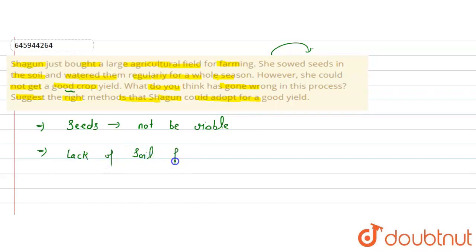Second, there may be a lack of soil fertility. The soil can be less fertile, which is why the crop yield is not good. In addition, the crop might have got infected by any disease.